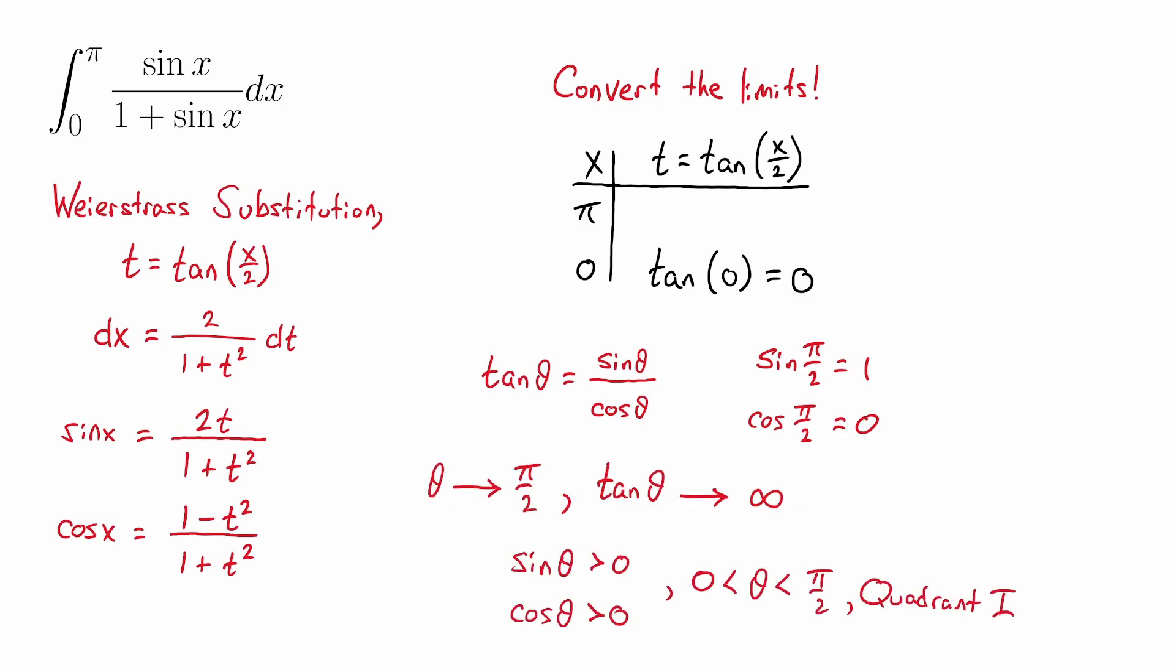Instead of plugging in x equals π, we're going to think about what happens to tangent of θ as θ, the angle approaches π over 2. Now, as the angle approaches π over 2, we're basically within the first quadrant. Sine and cosine are positive within the first quadrant, positive for angles between 0 and π over 2.